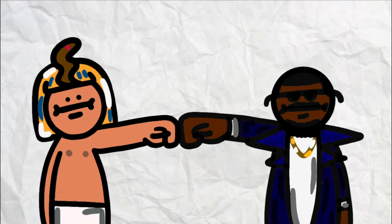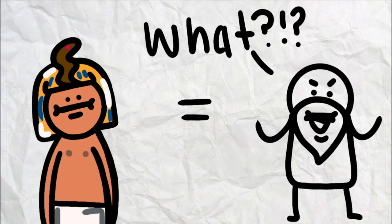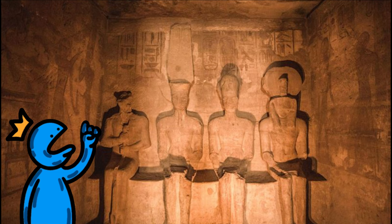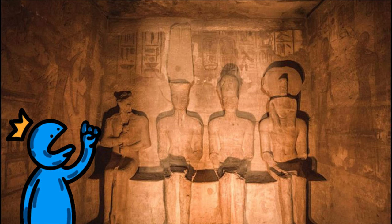It's like they had a Kanye in ancient times, making himself equal to the gods. Its colossal statues and intricate carvings depict the power and grandeur of the ancient Egyptian civilization.